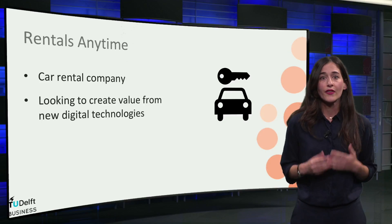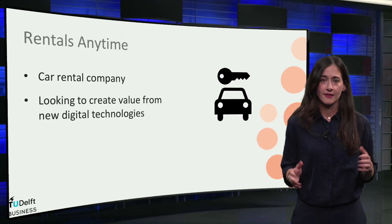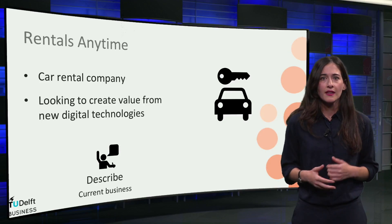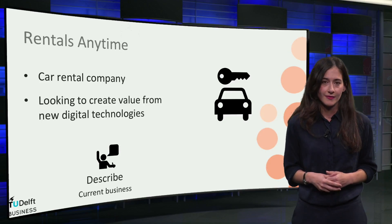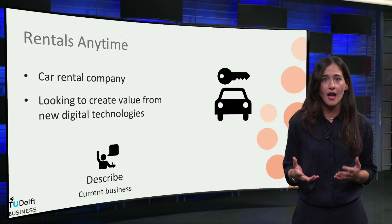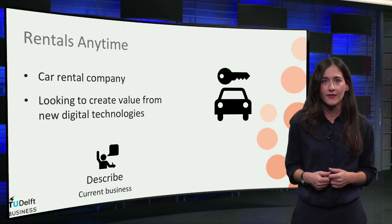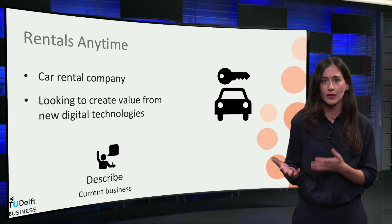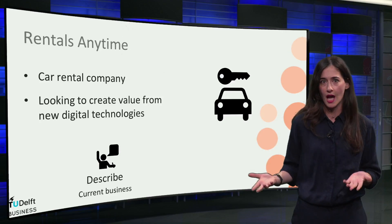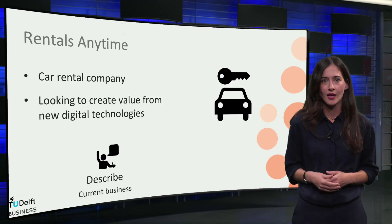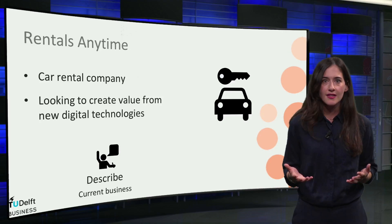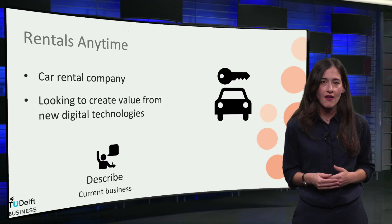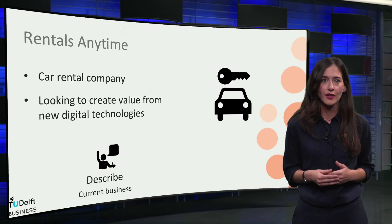The assignment will consist of three tasks. The first is describing the business model. How can you come up with an advice if you don't have a clear overview of how the business model looks now? Your first task is, therefore, to describe the current business model of the company.